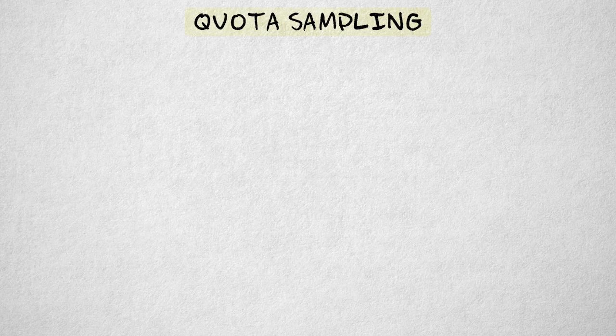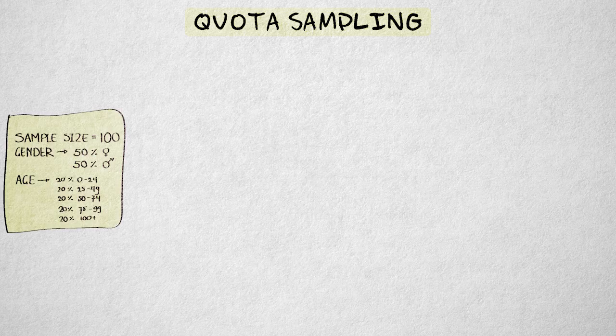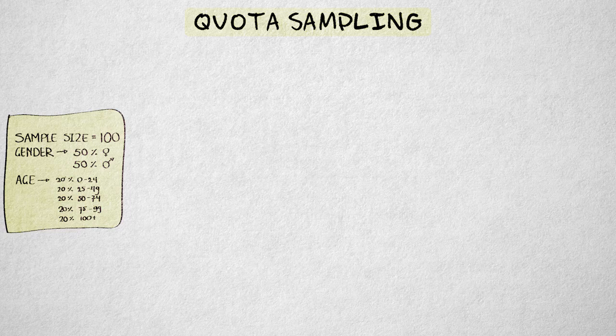Quota sampling is superficially similar to stratified random sampling. Participants in the sample are distinguished according to characteristics such as gender, age, ethnicity, or educational level.